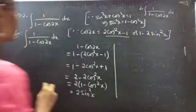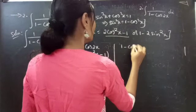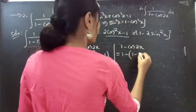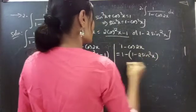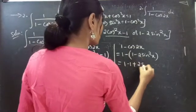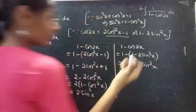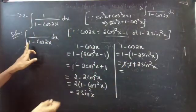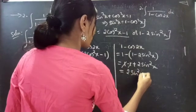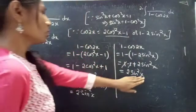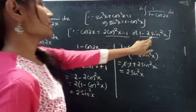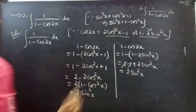If we choose the second formula directly: 1 minus (1 minus 2sin²x) = 1 minus 1 plus 2sin²x. The 1 and minus 1 cancel, giving 2sin²x. Both formulas give the same answer, but the second formula gives the result more quickly.